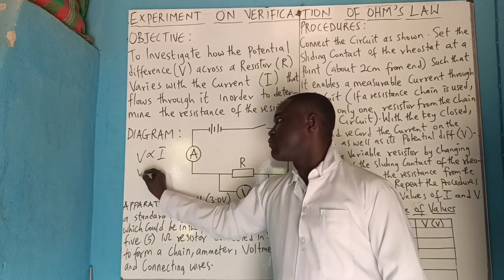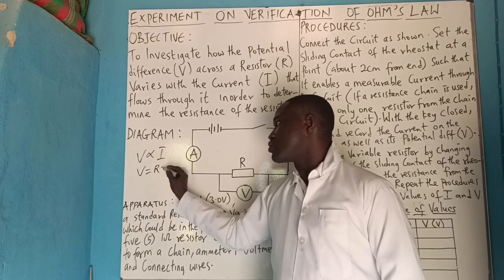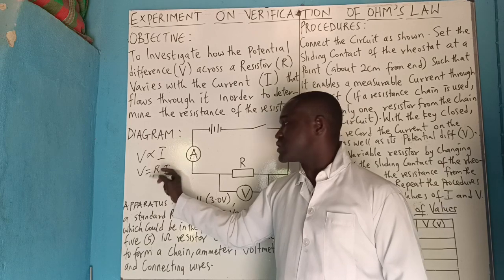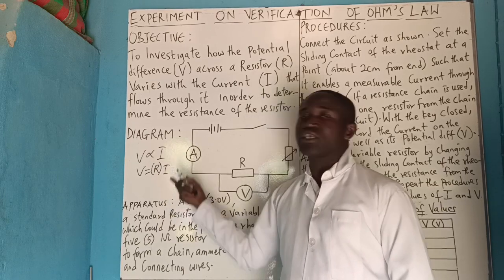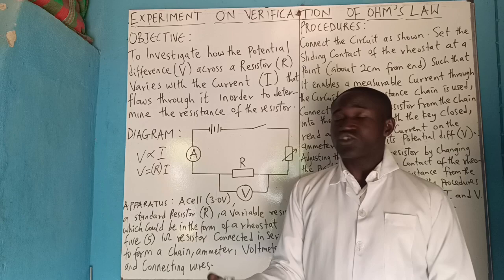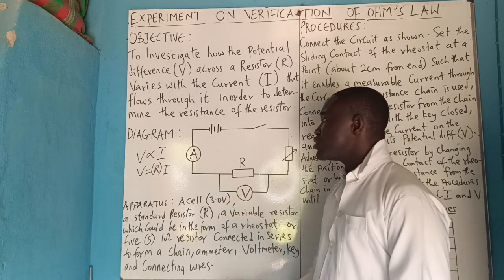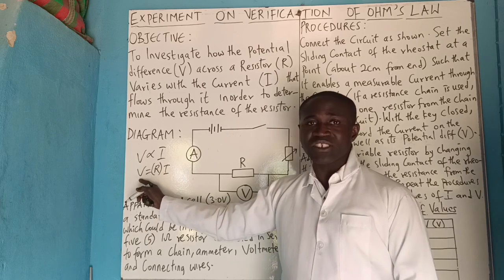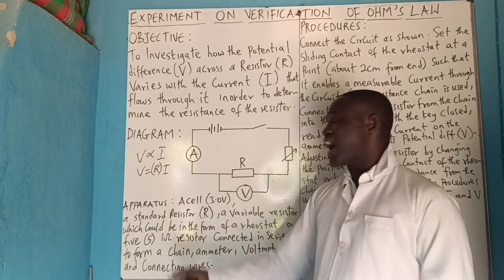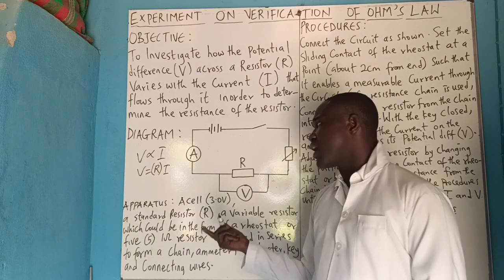And so, V equals IR, where R is constant — called the effective resistance. This experiment is to verify whether it is true that voltage or potential difference is directly proportional to current. That is, the higher the potential difference, the higher the current. That is what we want to verify.